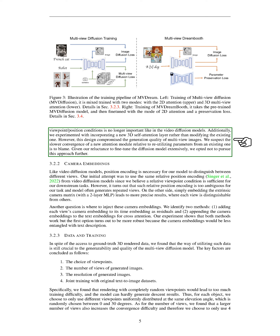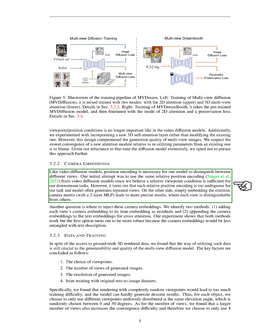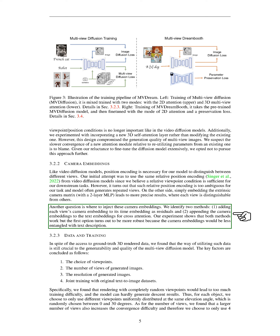For camera embeddings, our model needs to differentiate between various views. Initially, we tried using the same relative position encoding from video diffusion models, thinking that a relative viewpoint would be enough. However, we found that this method was too vague and often resulted in repeated views. Instead, we found that embedding the extrinsic camera matrix using a two-layer multi-layer perceptron (MLP) led to more accurate results, with each view being distinct from the others. We identified two methods for incorporating camera embeddings: adding each view's camera embedding to its time embedding as residuals, and attaching the camera embeddings to the text embeddings for cross-attention. Our experiments showed that both methods worked, but the first was more reliable.